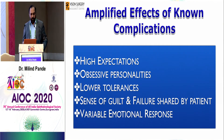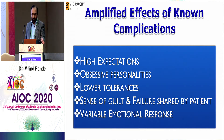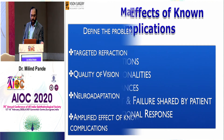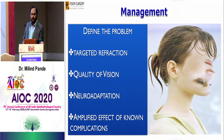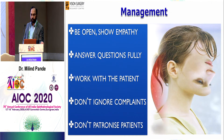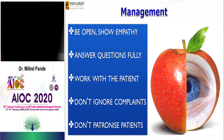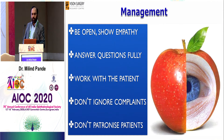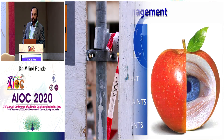Patients seeking presbyopia lenses have very high expectations. They have obsessive personalities and lower tolerances for accepting anything less than so-called perfect vision. How do we manage these problems? You have to define the problem, target the refraction, think in terms of quality of vision, and think in terms of neuroadaptation. You must be open, talk to patients very clearly, answer their questions fully, and never ignore their complaints — because the moment you start patronizing the patient, it becomes very difficult to manage things further.